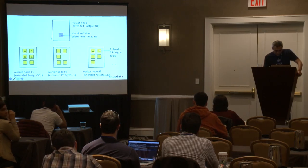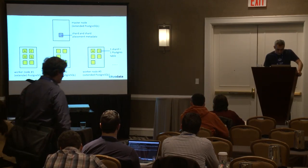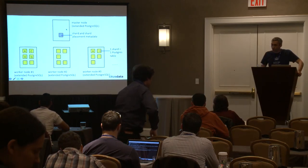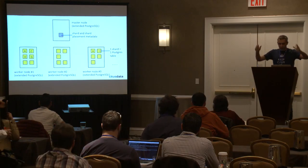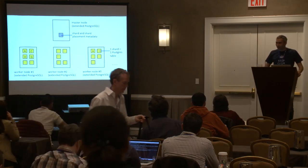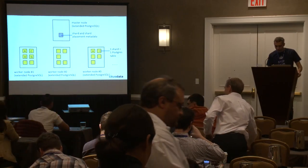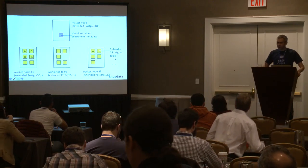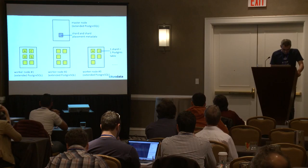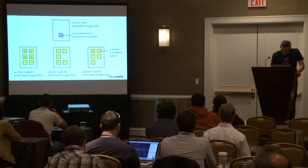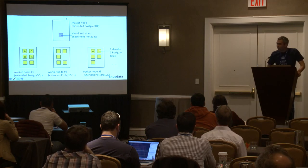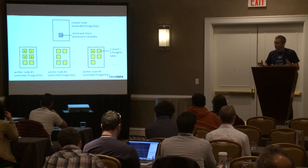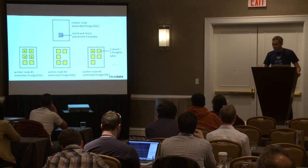We also have a master node. The master node is also an extended PostgreSQL. When you send a query to the master node, the distributed query planner takes that query, transforms it into a commutative computation, breaks it up into many smaller computations, pushes them into the worker nodes, does the computations, gets the intermediate results, merges them, and gives them back to the user. We don't keep any data on the master node — all we have is the shard and shard placement metadata.